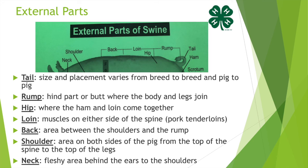The back is the area between the shoulders and the rump. The shoulder is the area on both sides of the pig from the top of the spine to the top of the legs. The neck is the fleshy area behind the ears going all the way to the shoulders.